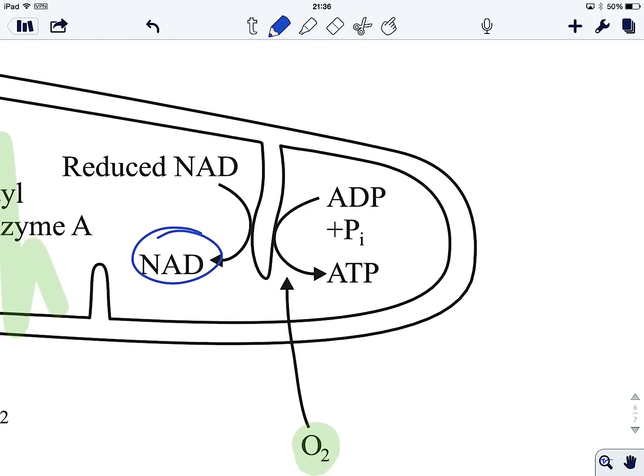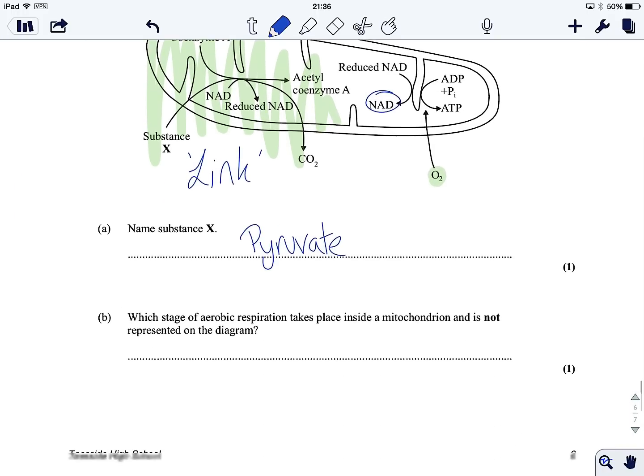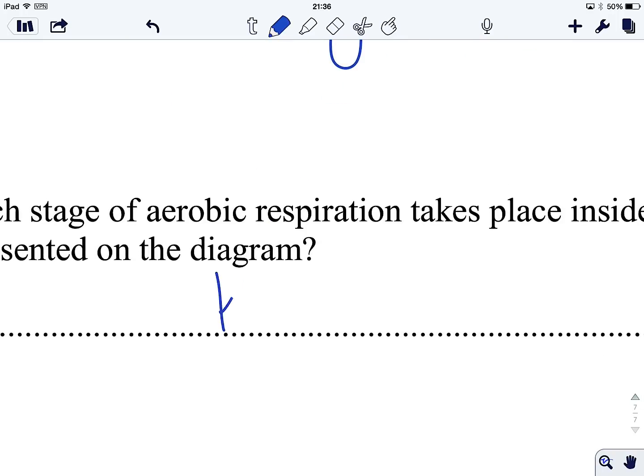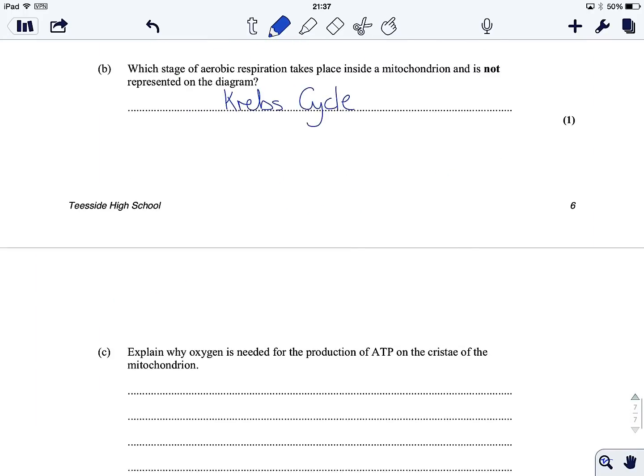So the final one that's missing then is Krebs. So Krebs cycle is missing. There we are. Two questions done. What else have we got here?